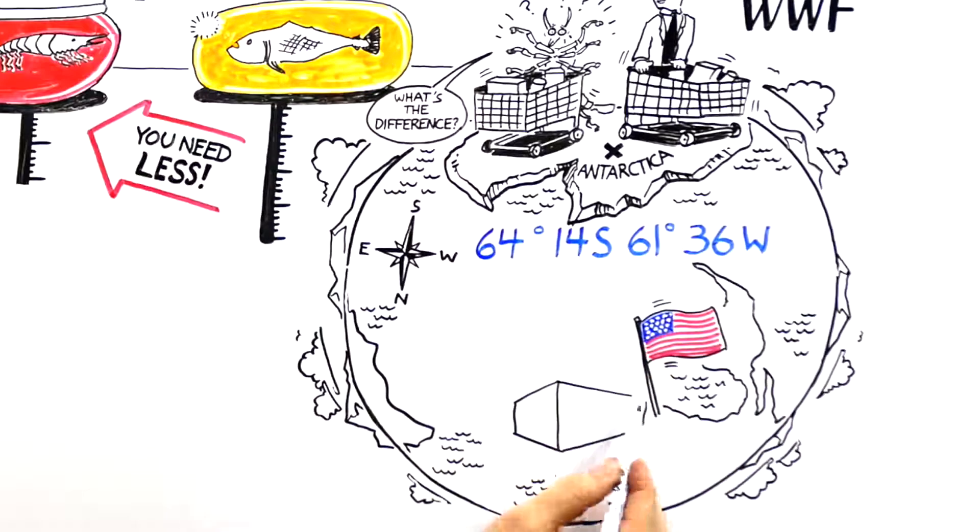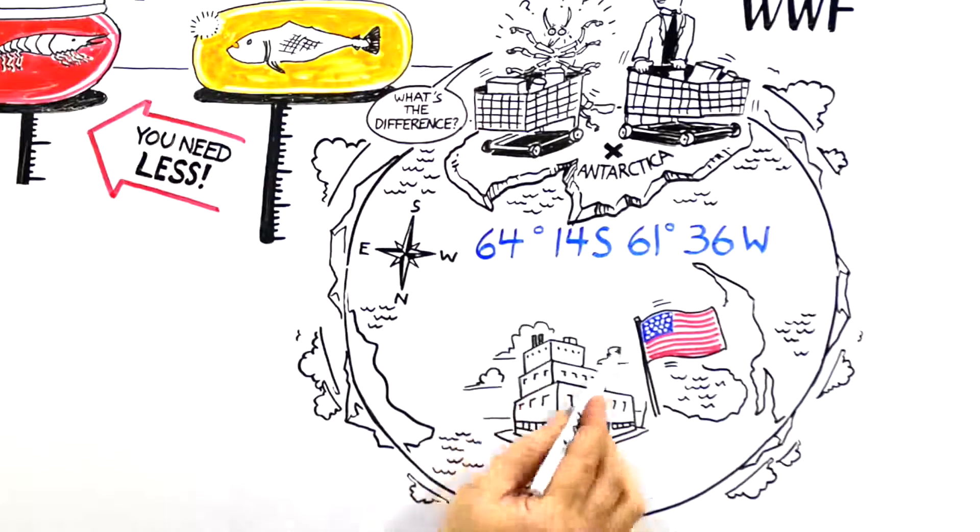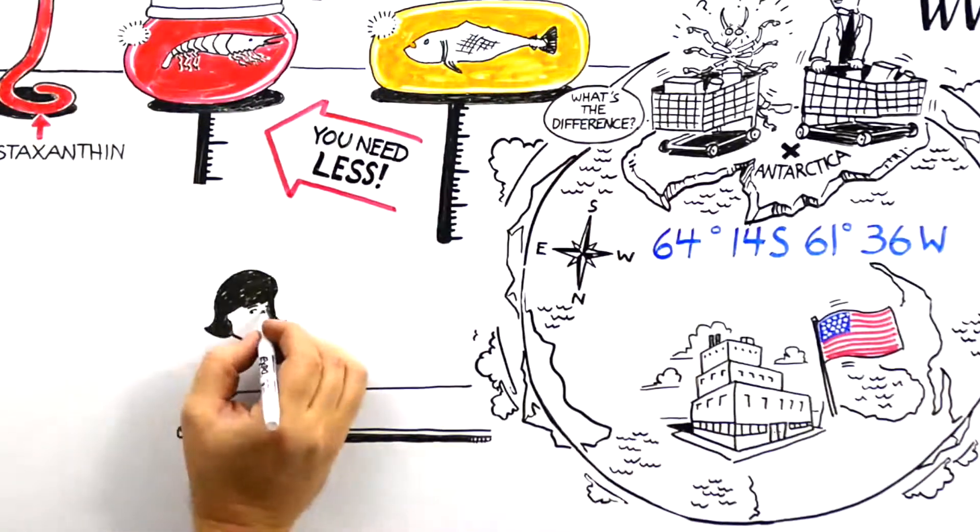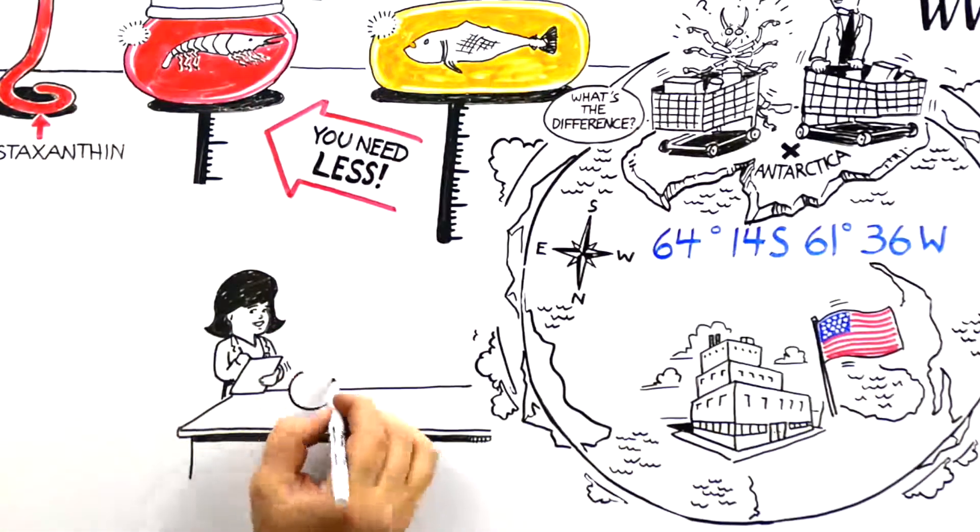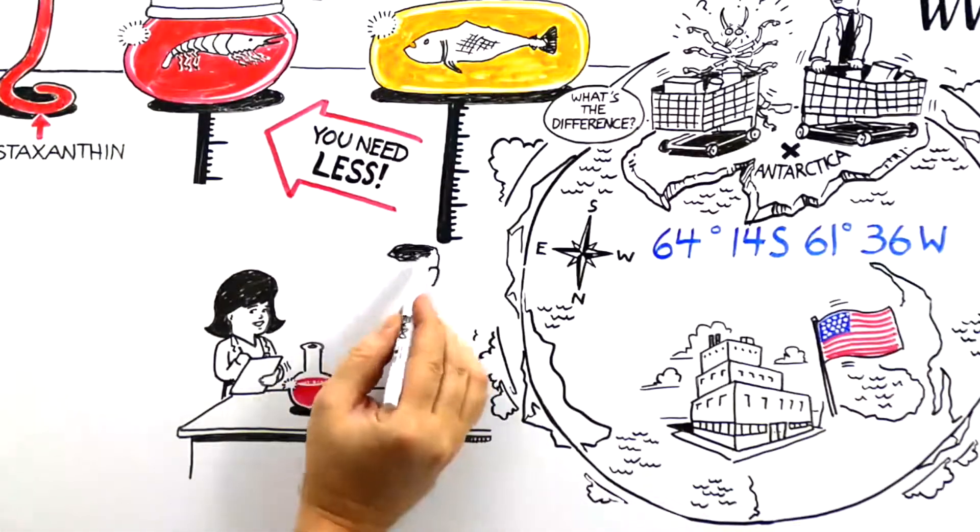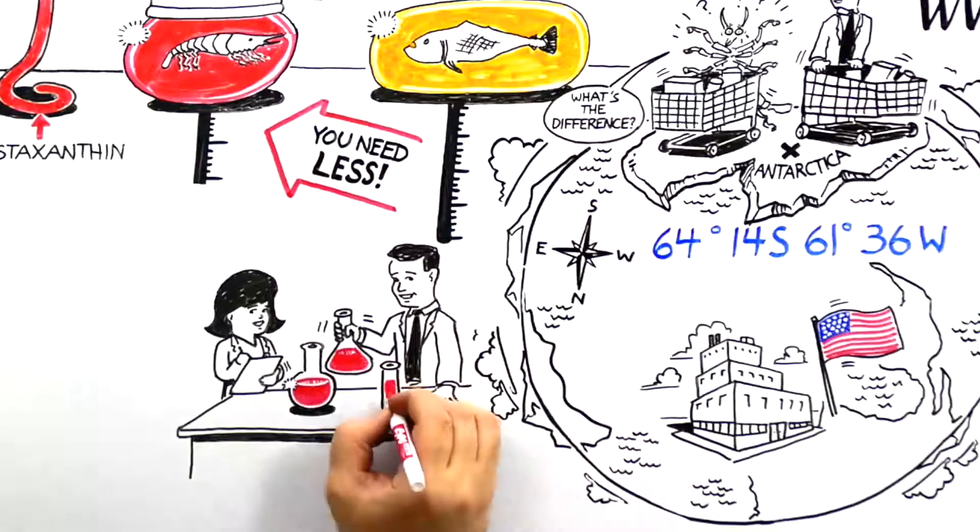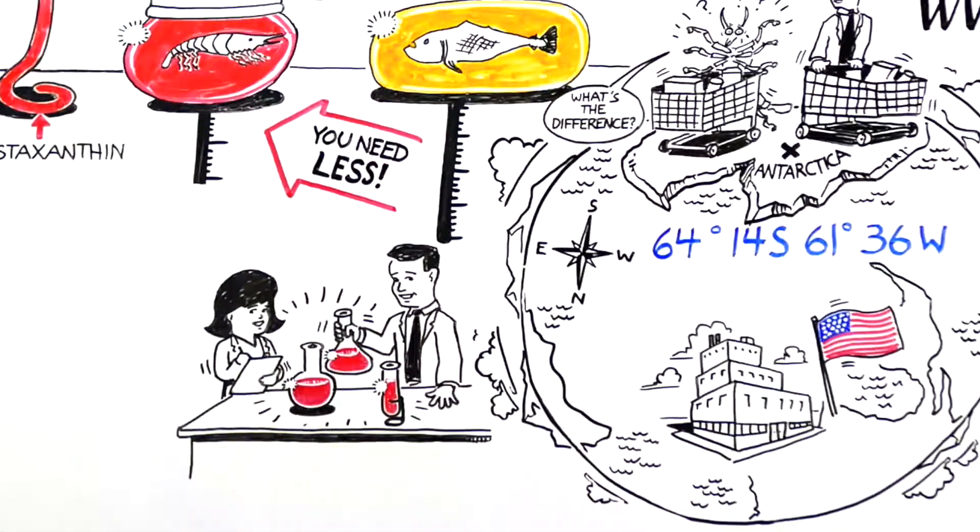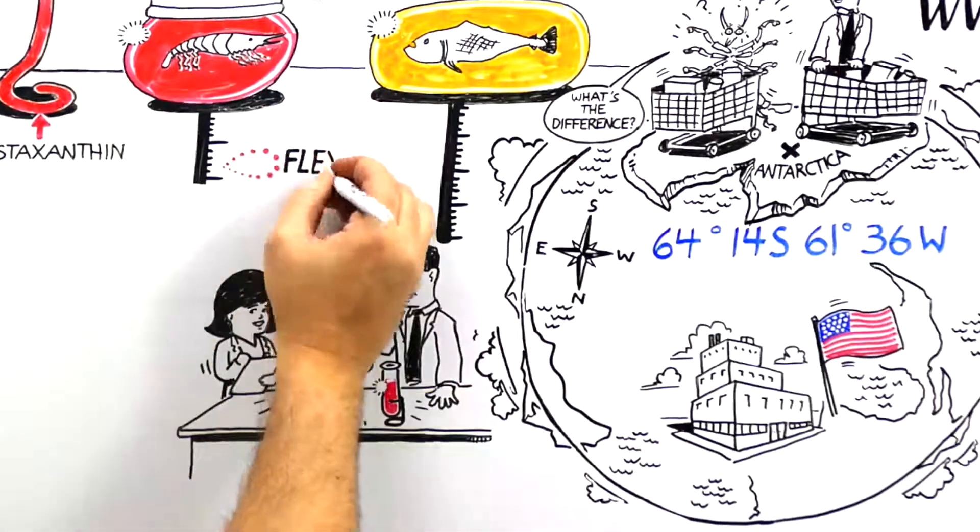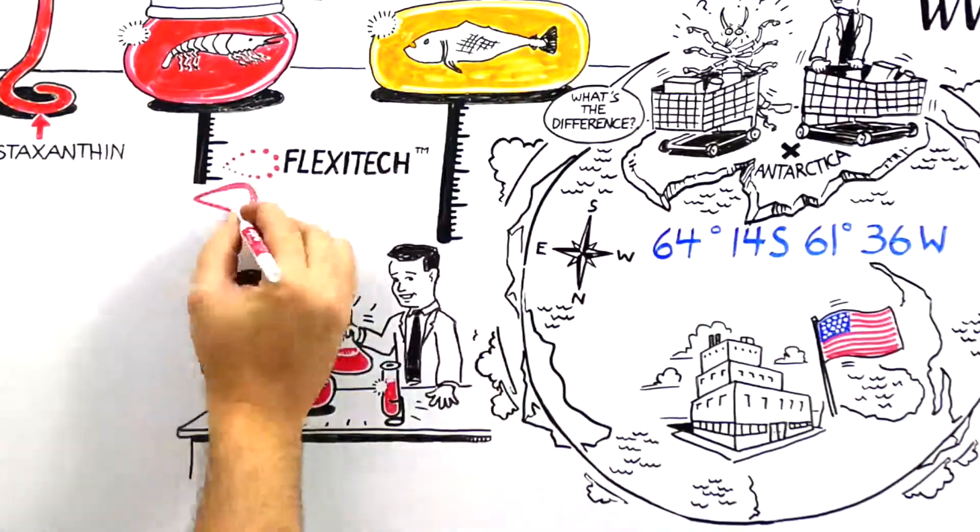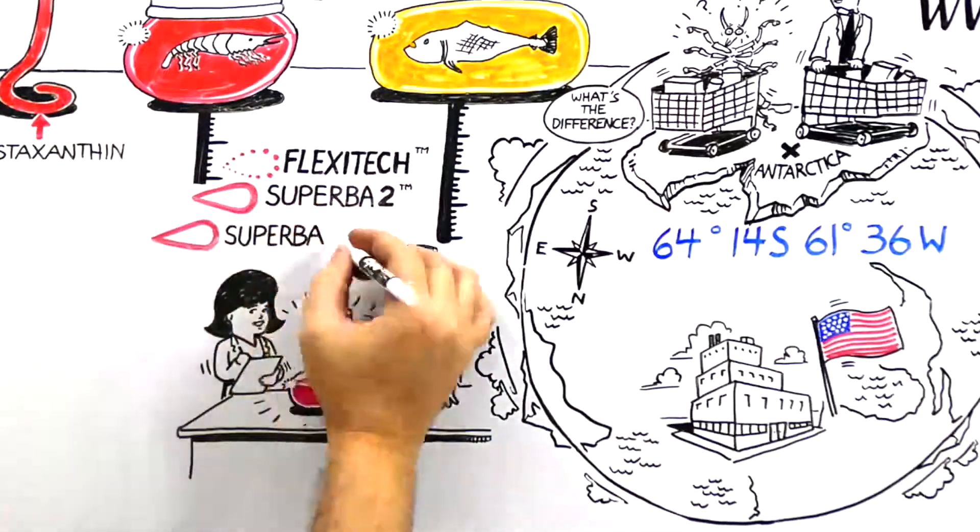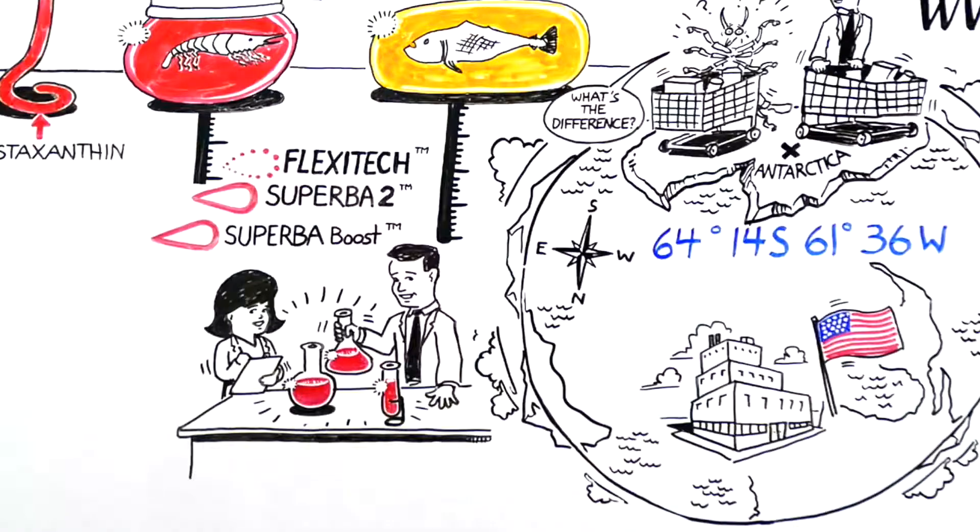Superba krill oil is manufactured stateside in Houston, Texas, in a facility that has triple the capacity of any other supplier in the industry. But the best part of this facility? It houses an exclusive technology that enables Aker BioMarine to offer krill oil products the market has never before seen. Today, this technology, called Flexi-Tech, has given birth to products like Superba 2 and Superba Boost. But tomorrow, it will yield other innovations to keep the market moving forward. Simply put, the possibilities are endless.